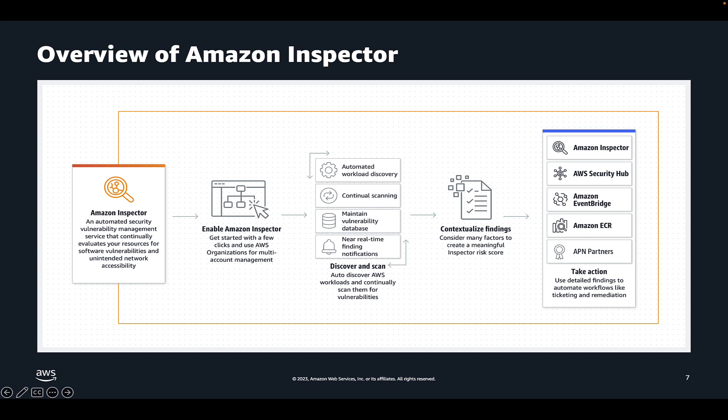This gives you a consolidated view of vulnerabilities across your compute environment. Amazon Inspector also provides a highly contextualized vulnerability risk score by correlating vulnerability information with environmental factors such as external network accessibility to help you prioritize the highest risk to address.